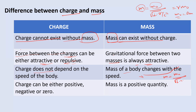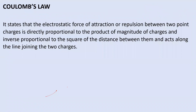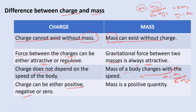The fourth point is that charge can be either positive, negative, or zero. A body can have positive charge, negative charge, or zero charge. But mass is always positive — mass cannot be negative and cannot be zero; it always has a certain positive value.